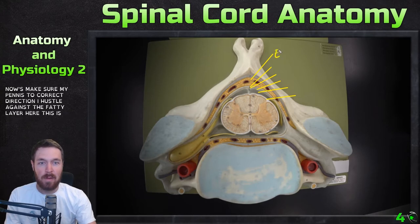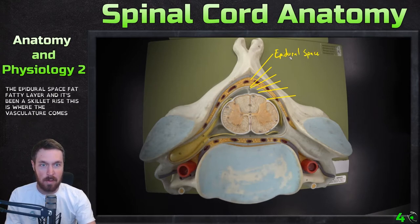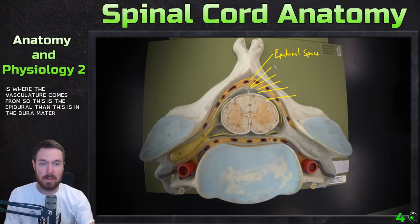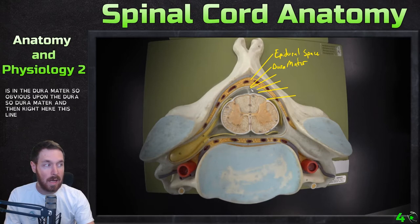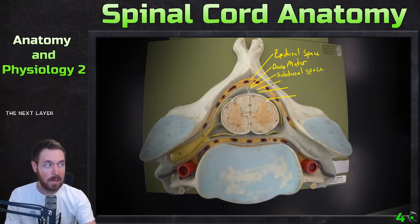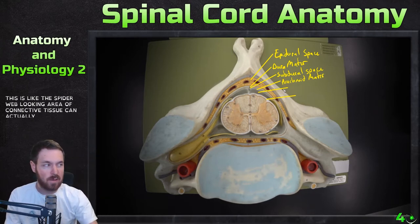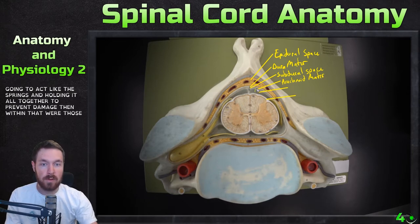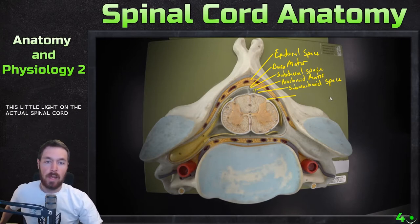So again, the fatty layer here is the epidural space — that fatty layer is vascularized, this is where the vasculature comes from. Then this is the dura mater — epi is upon the dura. Then right here this line is the subdural space, and the next layer is the arachnoid mater. This is like the spider web-looking area connected to the springs holding it all together to prevent damage. Within that, where those little springs are, is the subarachnoid space. Then this little layer on the actual spinal cord is the pia mater.